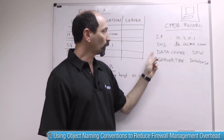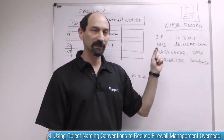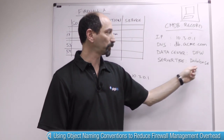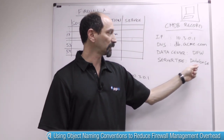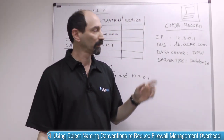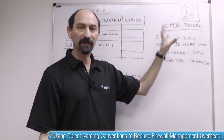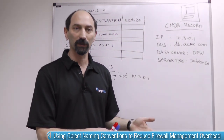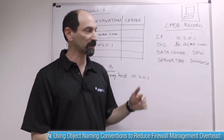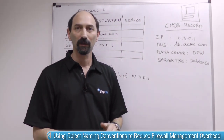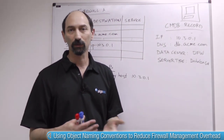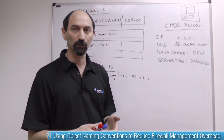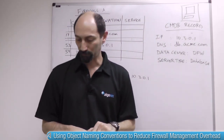It is located in the DFW data center and its server type is database. You have this system over there in the data center and now you need to put in firewall rules that refer to this server and allow traffic to and from it. So how are people going to write the rules that refer to this server?